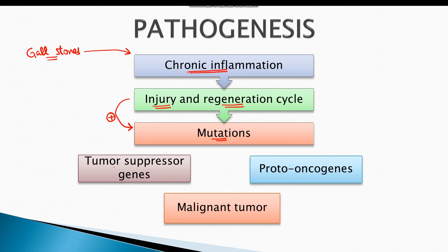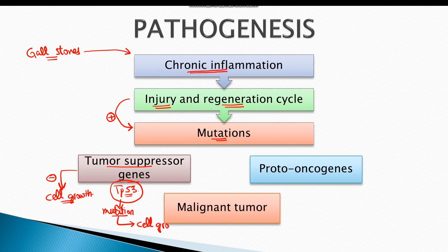Like all other malignancies, there are mutations in tumor suppressor genes such as TP53, which normally inhibit excessive cell growth. Once this gene is mutated, there is increased uncontrolled cell growth. There is also mutation in proto-oncogenes — in this particular case, the ERBB2 proto-oncogene is of key importance.